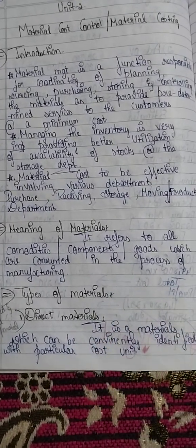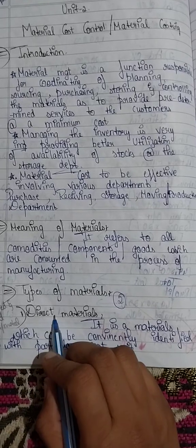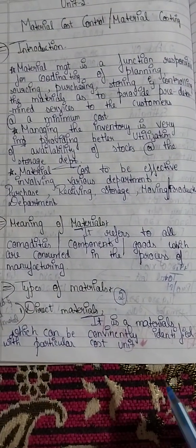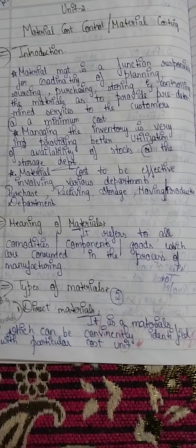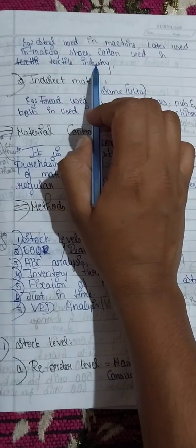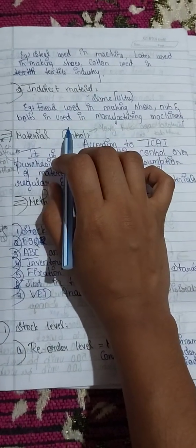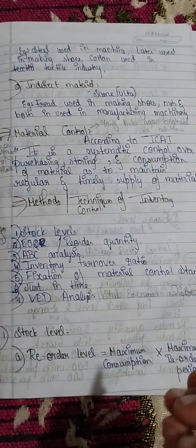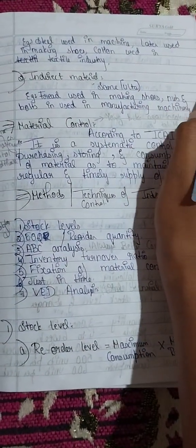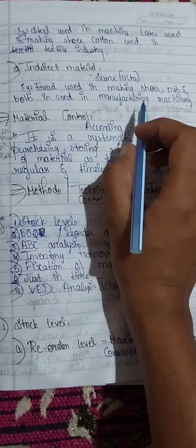Now I'm going to explain the types of materials. Material is very important. There are two types of materials: one is direct material and the other is indirect material. Direct material is easy to identify and allocate — for example, steel used in machines, leather used in making shoes, and cotton used in textile industries. Indirect material is also easy to identify — for example, thread used in making shoes and nuts and bolts used in manufacturing machinery.